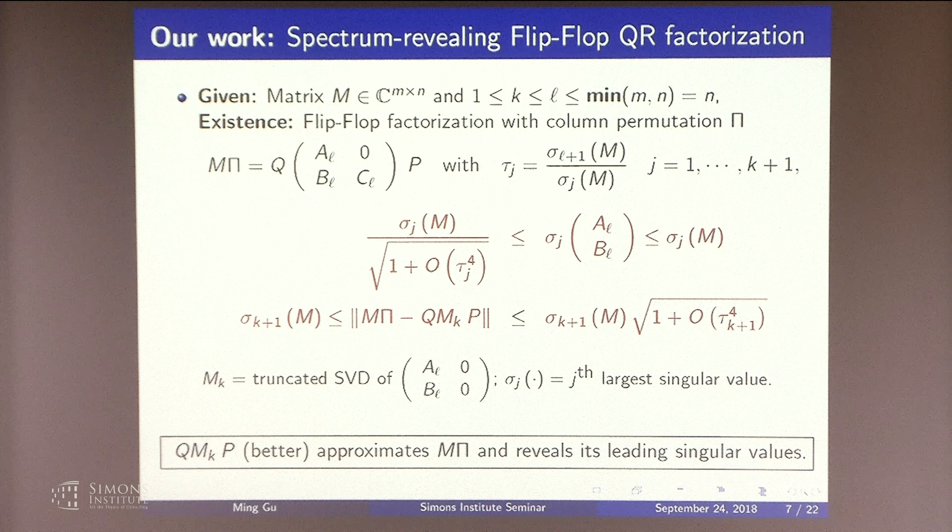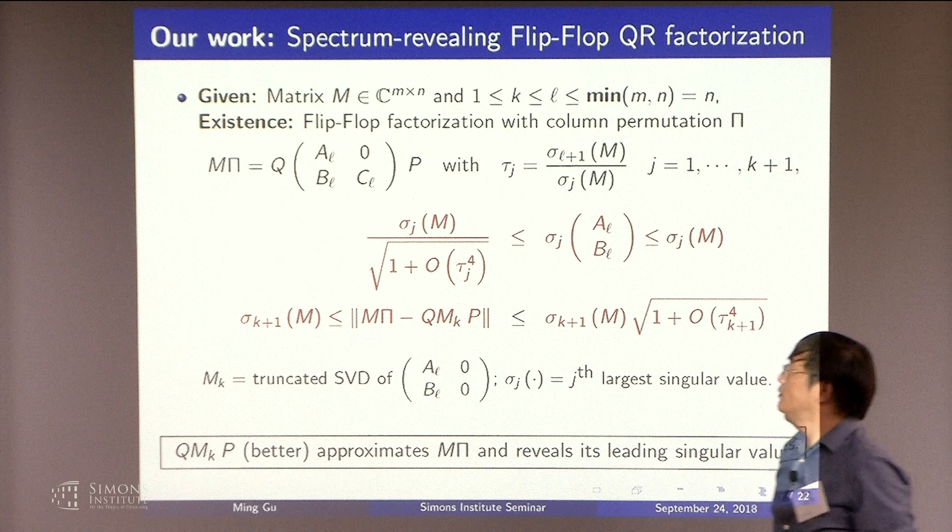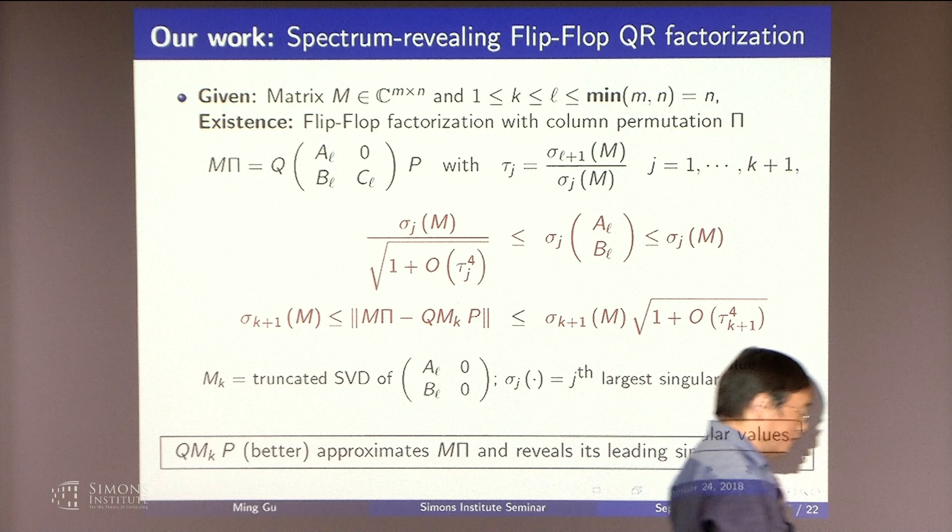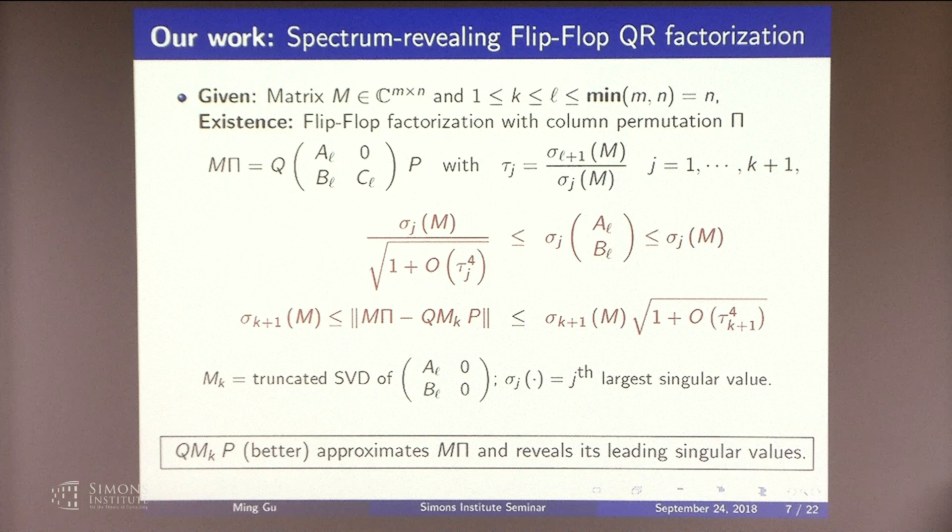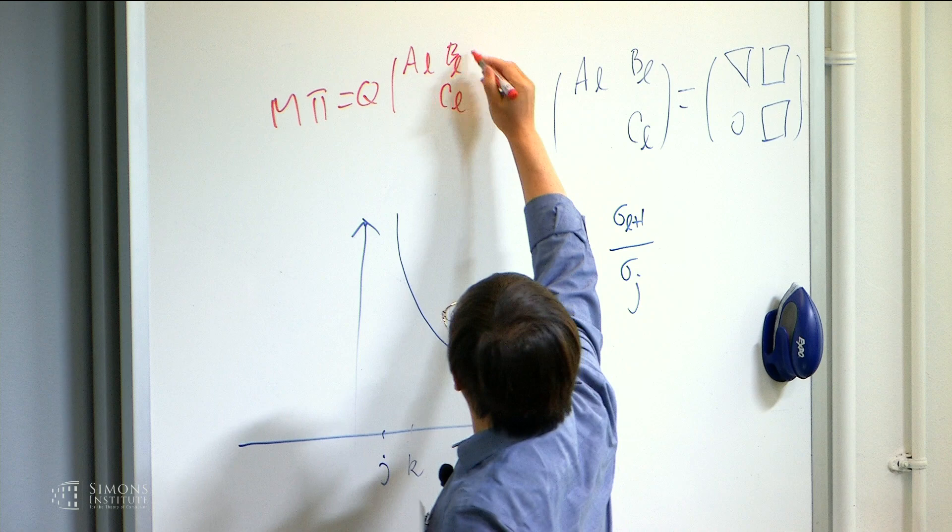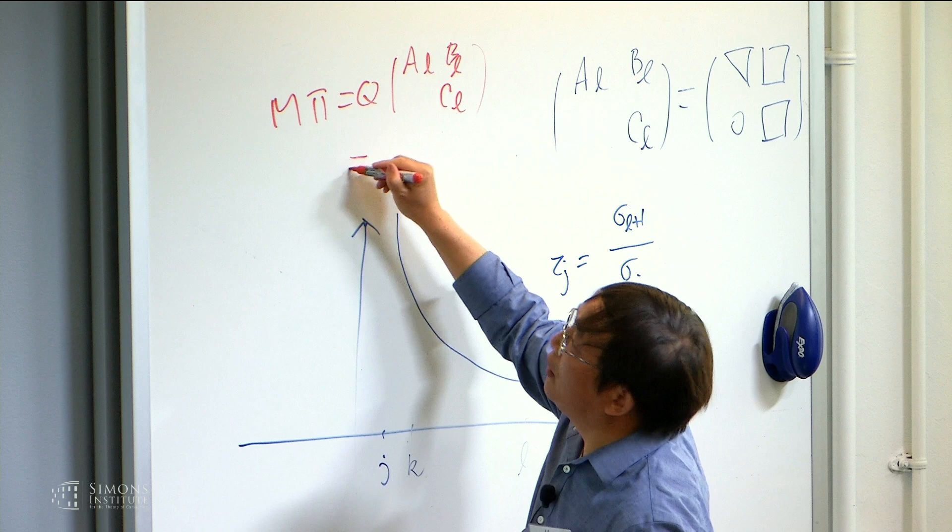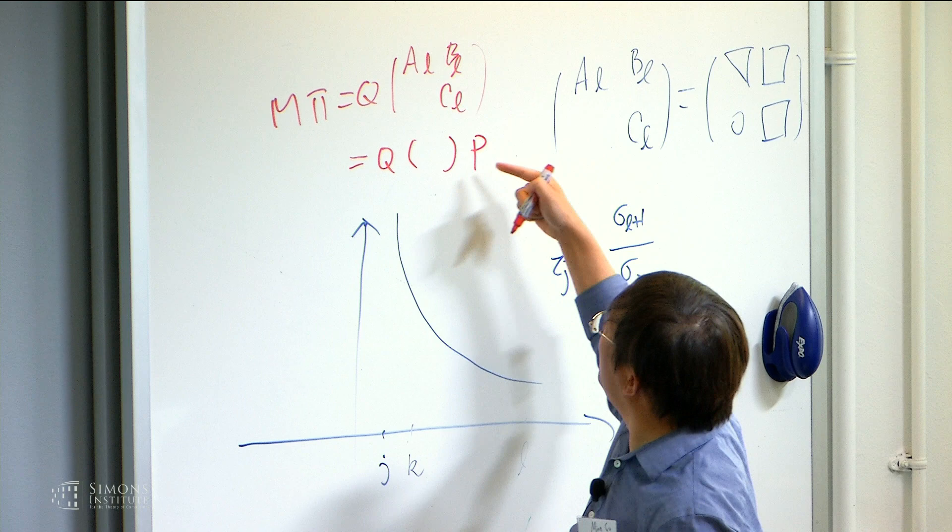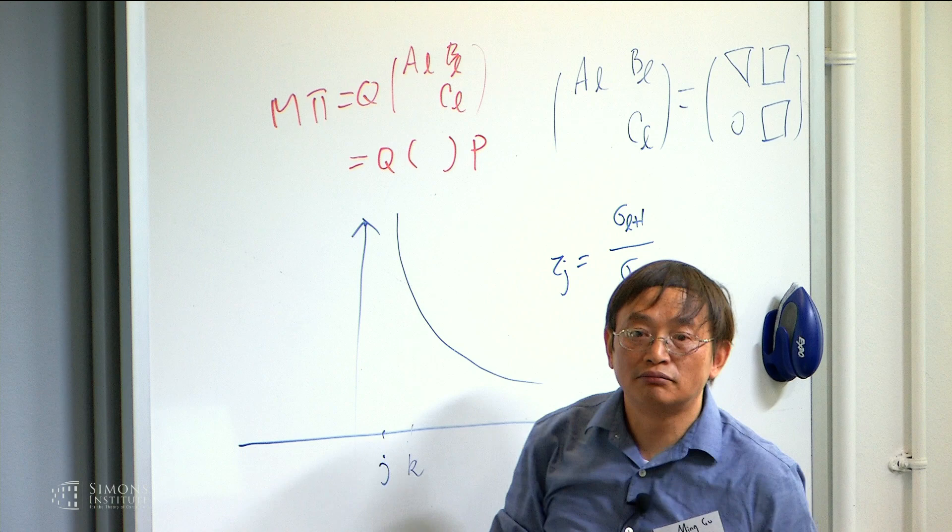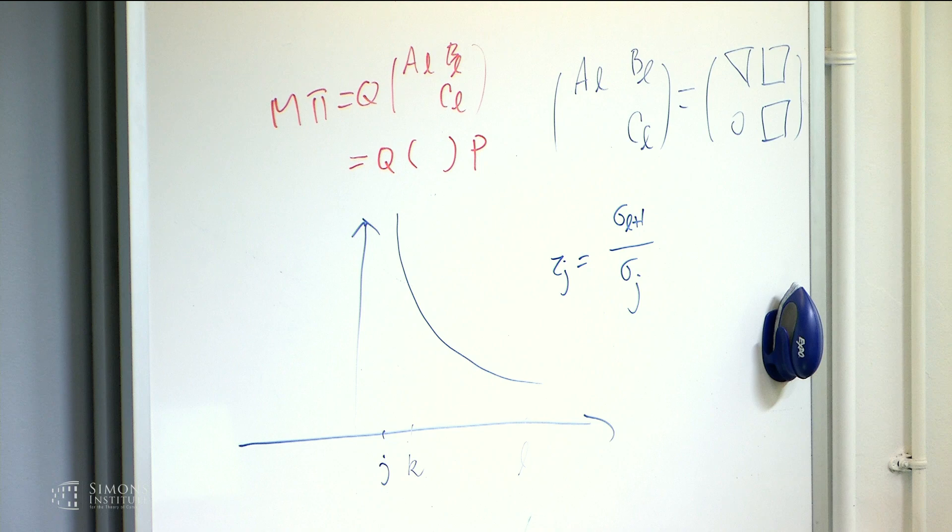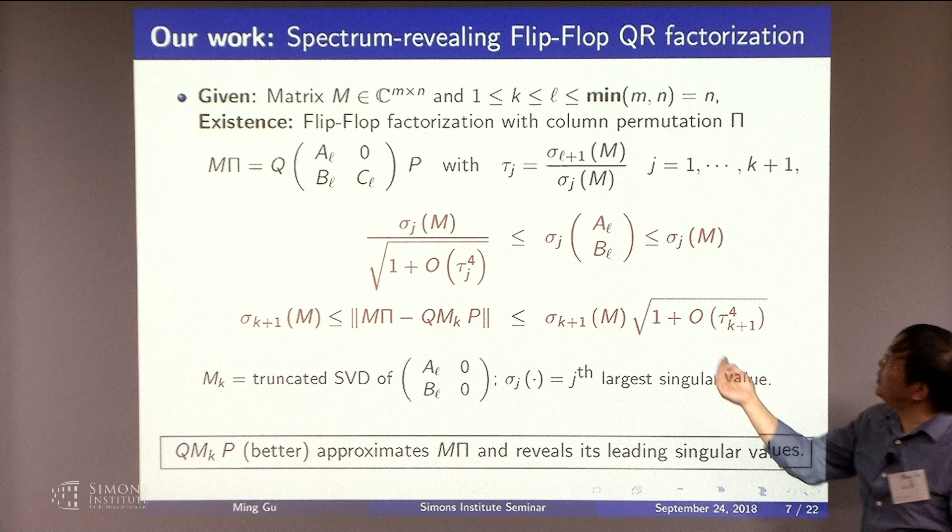So if you want to do more than tau squared, you could get in the tau to the fourth by doing the Stewart-type approximation. So what is this? You have M pi equals Q. This is the typical QR factorization. But if you do an LP factorization of this, this is upper triangular. You flipped to lower triangular. If you do that, then you throw away this piece, the trailing piece, you get an even better approximation.